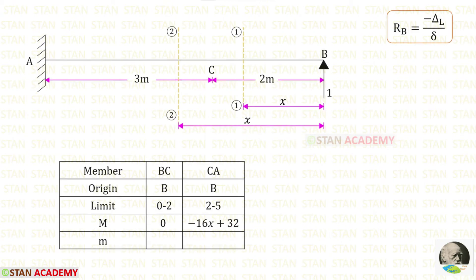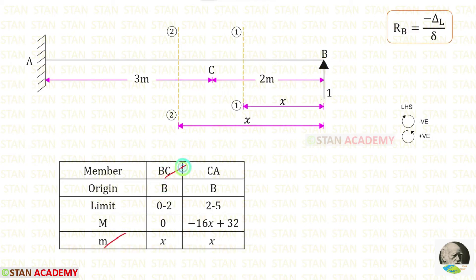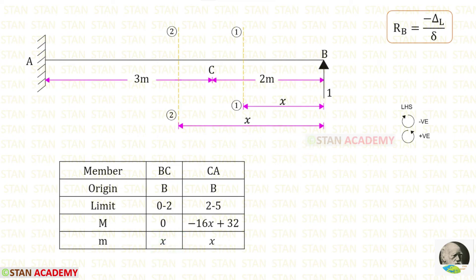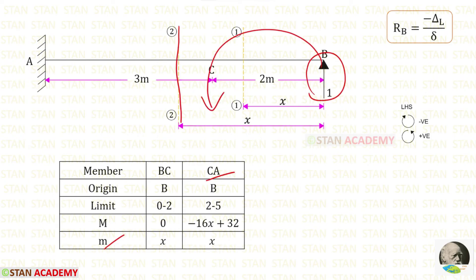Now we are going to find the moment small m. For this we remove all loads and apply a unit load in the direction of RB, which was acting upwards. For section BC, the unit load acts anticlockwise so it is positive, giving m = 1·x = x. For section CA, the unit load also acts anticlockwise at distance x, giving m = x as well.